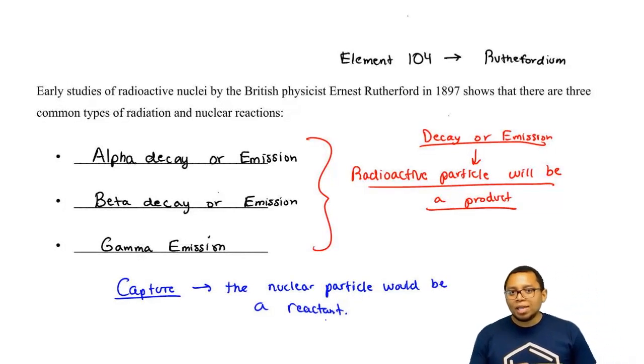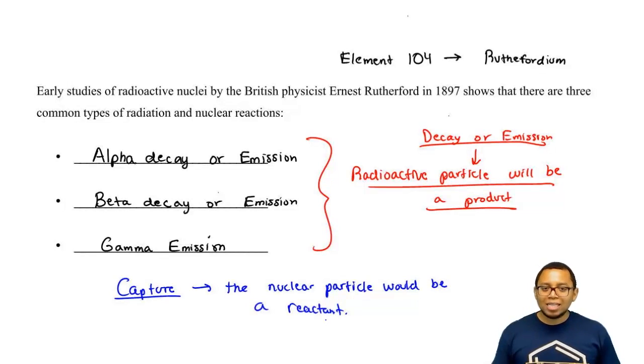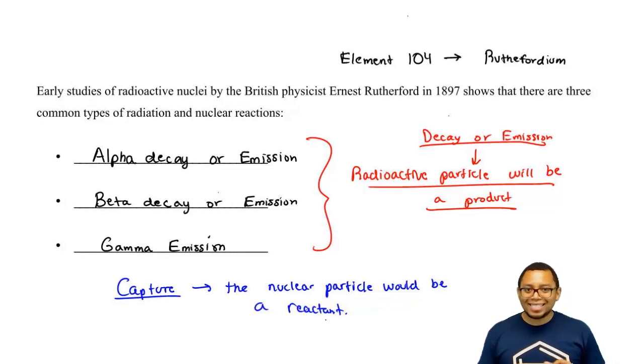So in alpha decay, we emit an alpha particle. In beta decay, we emit a beta particle. In gamma emission, we emit a gamma particle. These particles are what cause our elements to go from one type to another type. And what you have to remember is when they say decay or emission, they're saying that this alpha particle, beta particle, or gamma particle will be a product.